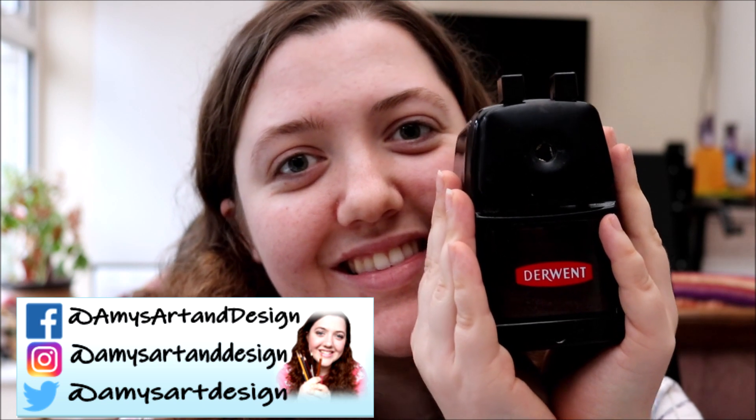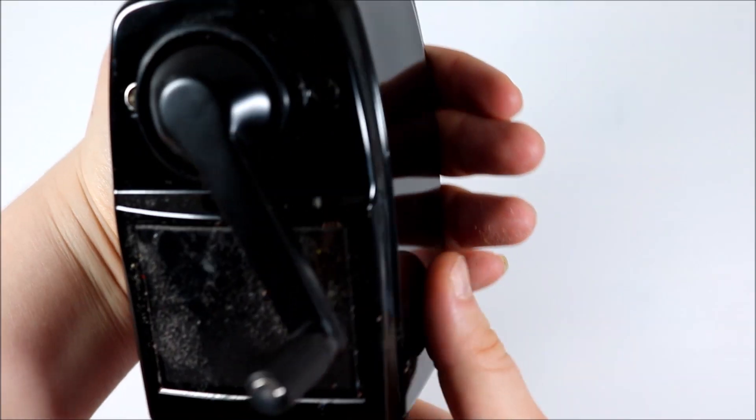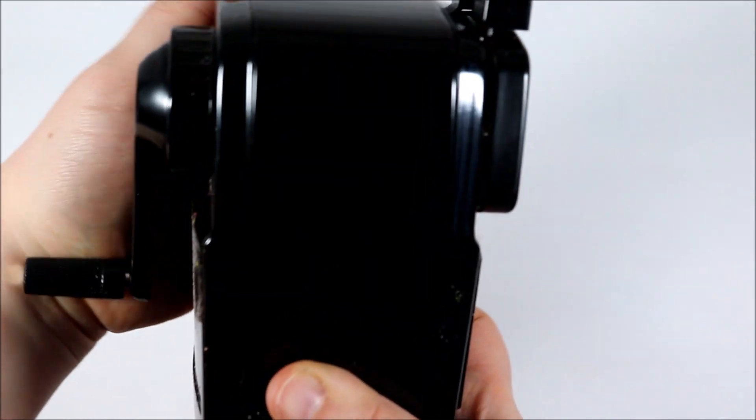So getting right in with this review today I am reviewing the Derwent manual sharpener which is a helical sharpener for pencils and that can be charcoal pencils, graphite pencils, coloured pencils, you name it.